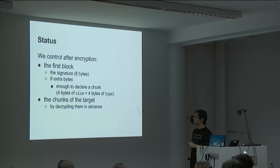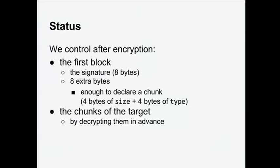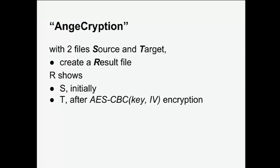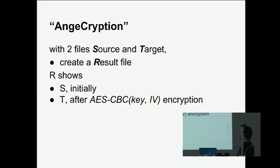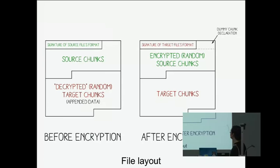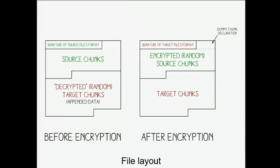So after encryption, we control the first block: 8 bytes of PNG signature and 8 extra bytes — which is exactly enough to declare a chunk with no brute forcing needed. This contains a dummy chunk that covers the encrypted Google logo data. Then after that, the chunks of the target that were pre-decrypted and appended to the source file. Jean-Shane baptized this technique — they were looking for a smart name and said 'let's call it encryption with two files.' You have two original files and create one single file R that shows S initially, and after AES-CBC encryption will show the target file.